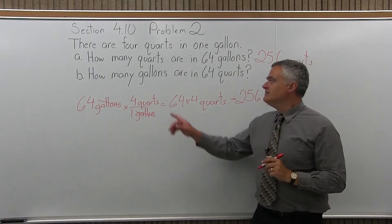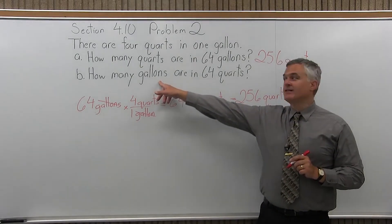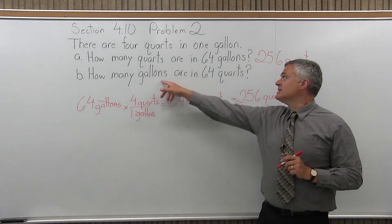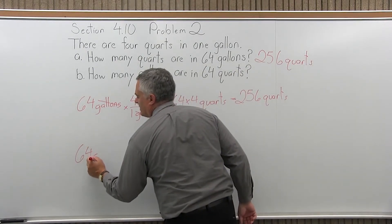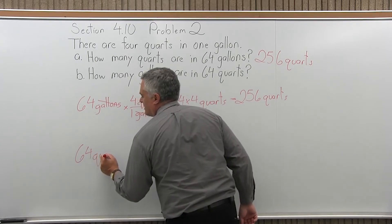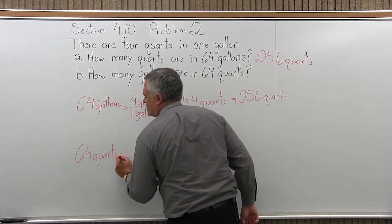Now B, how many gallons are in 64 quarts? So, again, start with the given amount. You're given 64 quarts. You want to convert that to gallons.